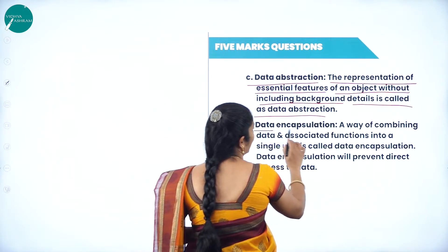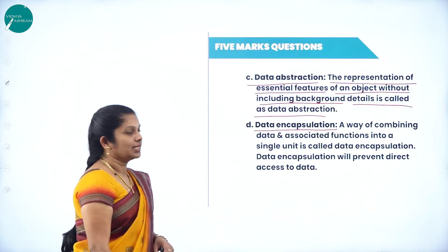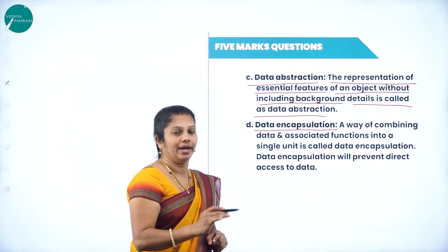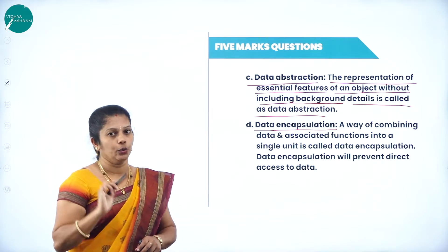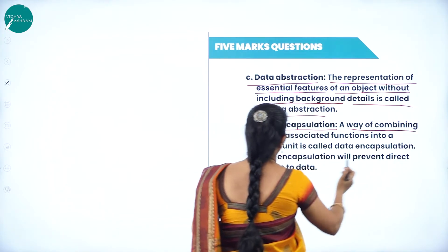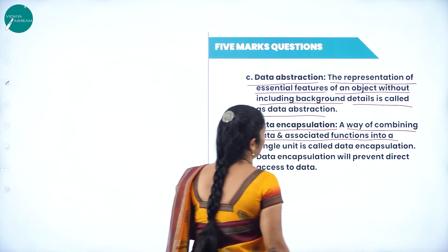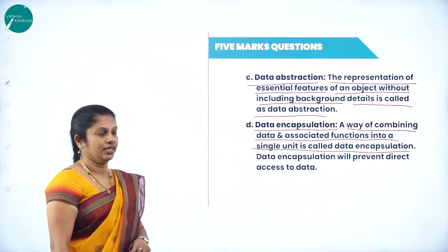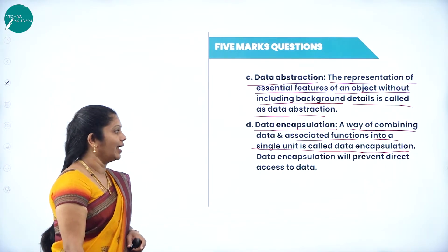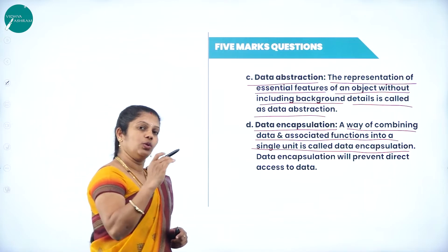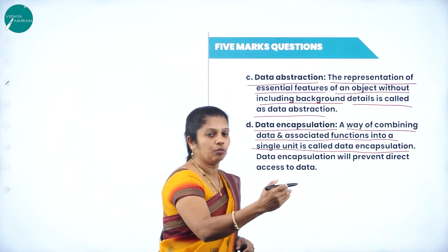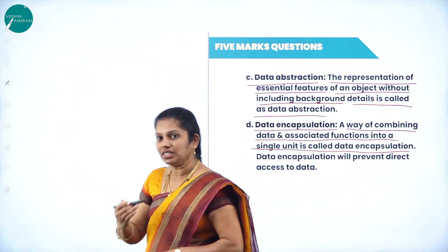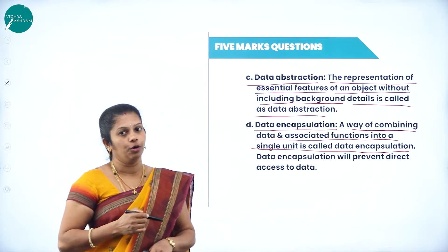The next feature is data encapsulation — a process of binding, combining data and function into a single unit. A way of combining data and associated functions into a single unit is called data encapsulation, and it will prevent direct access of data. For example, in a mobile, if you want to send a contact from one mobile to another, then with the help of functions only you can process — data and functions must be combined.